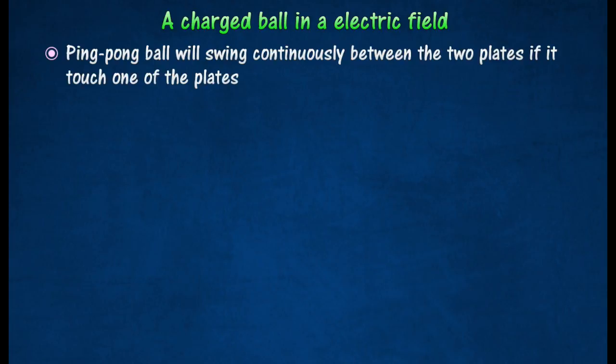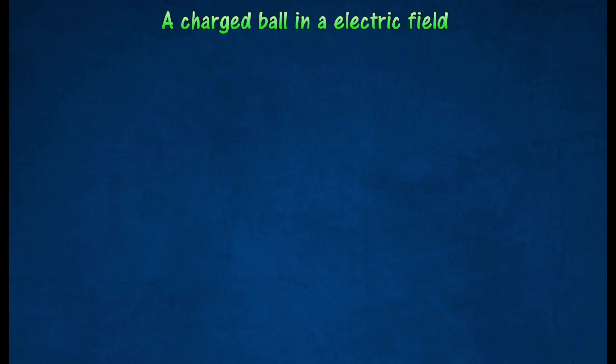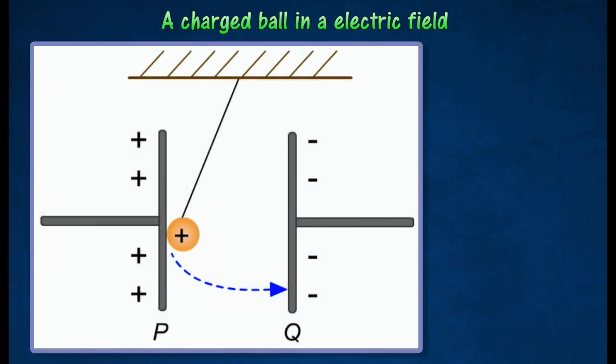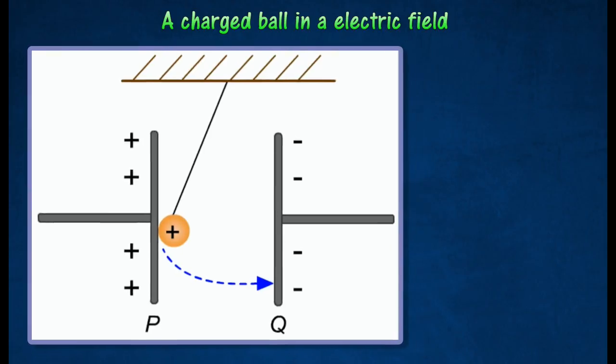If the ping pong ball is allowed to touch one of the plates, it will swing to and fro continuously between the two plates. The ball will become positively charged if it touches the positive plate P. Since like charges repel, the ball will be pushed towards plate Q.